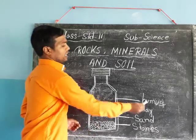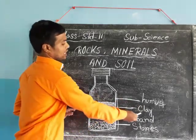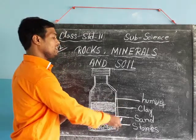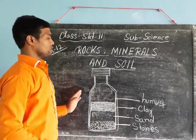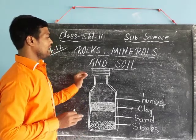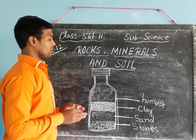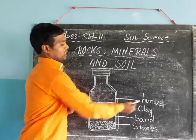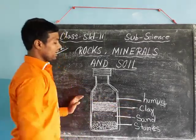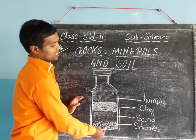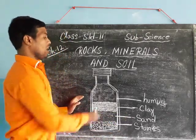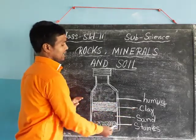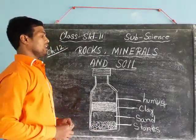The different layers are clearly present. The upper layer is called humus, followed by clay, then sand, and at the bottom are the stones. These four layers — humus, clay, sand, and stones — are the components of soil.